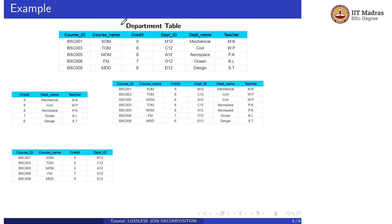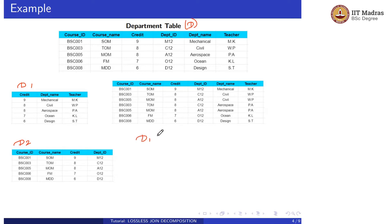Consider this example with a department table D. This table D is decomposed into D1 and D2. To check whether this decomposition is lossless or lossy, we perform the natural join operation between D1 and D2. For natural join, there must be some common attribute between D1 and D2. Here the common attribute is 'credit'. We perform the natural join between D1 and D2 and get the resulting table.